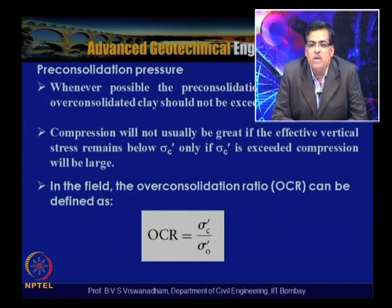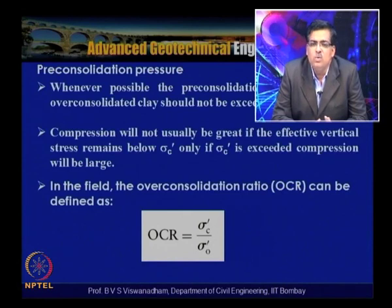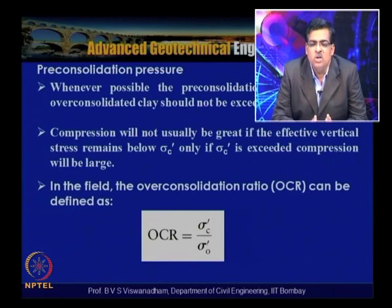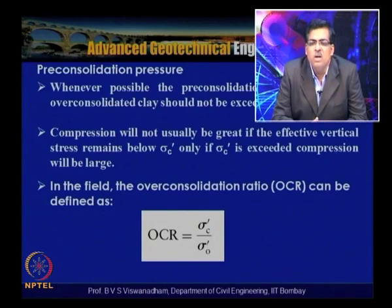The Over-Consolidation Ratio (OCR) is defined as the ratio of pre-consolidation pressure sigma_c-dash to the present effective overburden pressure sigma_0-dash. For normally consolidated soils, OCR is in the range 1–2. OCR greater than 2 is considered lightly over-consolidated. Due to past structures or glaciation activity, OCR can reach 9–15 or more for highly over-consolidated soils, which have very low water content, while normally consolidated soils are soft with very high water content.